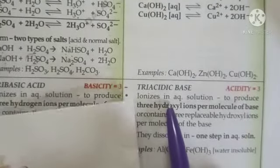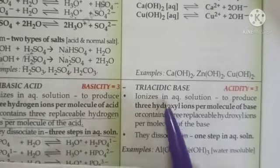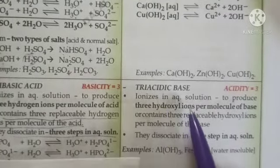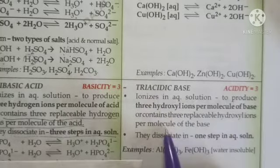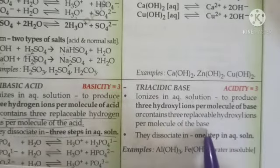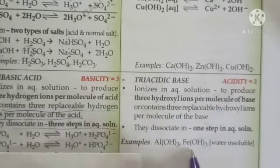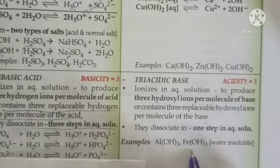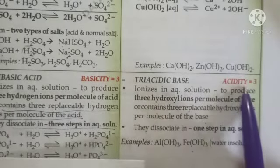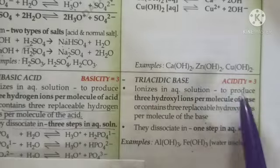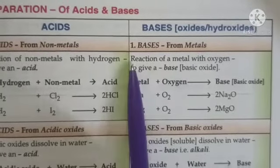A triacidic base contains three replaceable hydroxyl ions per molecule of the base. Examples are aluminium hydroxide and iron(III) hydroxide, and their acidity is three.